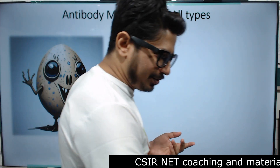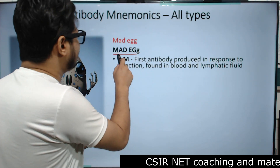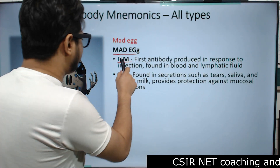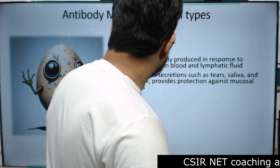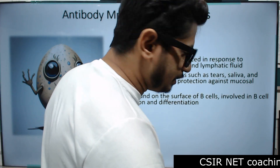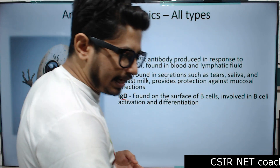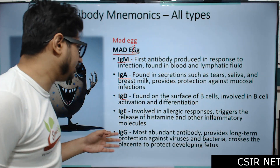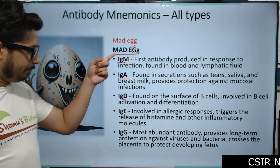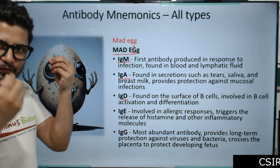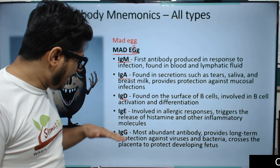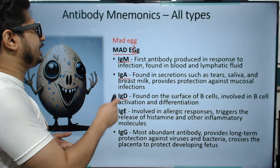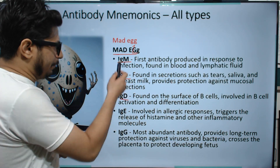M is IgM — immunoglobulin M. Then we have A — IgA, immunoglobulin A. Then D — immunoglobulin D. E — IgE or immunoglobulin E. And G — immunoglobulin G. IgM is the first kind of antibody our body always produces, and IgG is the most abundant antibody our body produces.